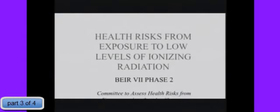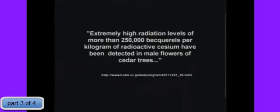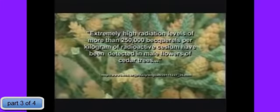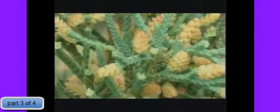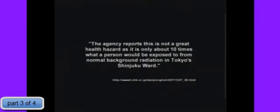What got me thinking about this were two disturbing news stories out of Japan. The first story comes from NHK, which is the major Japanese radio television station. The story reports that in Fukushima Prefecture, very high levels of radioactive cesium has been found in male cedar flowers. The data indicates that it's about a quarter of a million disintegrations per second in a kilogram of these cedar flowers. That's pretty serious because in the spring the flowers will bud and that radioactive cesium will go airborne again. What got my attention was the Japanese response to that. Here's what NHK said: The agency reports this is not a great health hazard as it is only about ten times what a person would be exposed to from normal background in Tokyo.